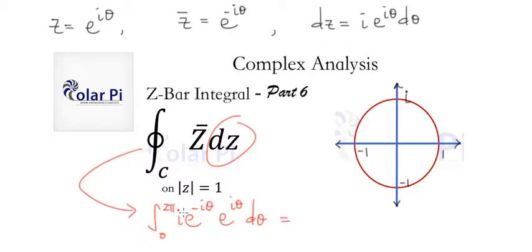So, we've got taking the i out in front, 0 to 2 pi, and then it's d theta, which is 2 pi i.